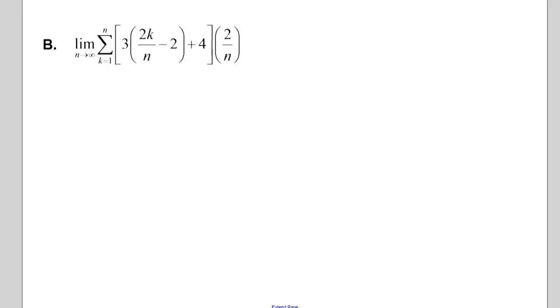And the first thing we want to note is delta x. And so we can see that delta x is equal to 2 over n, and we said that this is going to be b minus a over n. So b minus a is equal to 2.